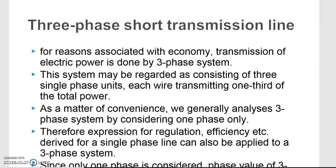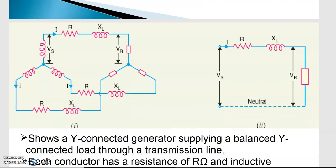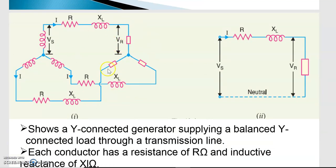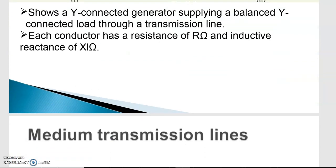For the three-phase short transmission line, we consider a star-connected generator supplying a star-connected balanced load. There are three different inductances and three different resistances, but while modeling this system we consider lumped R and lumped XL, and a similar analysis is done as for the single-phase case.